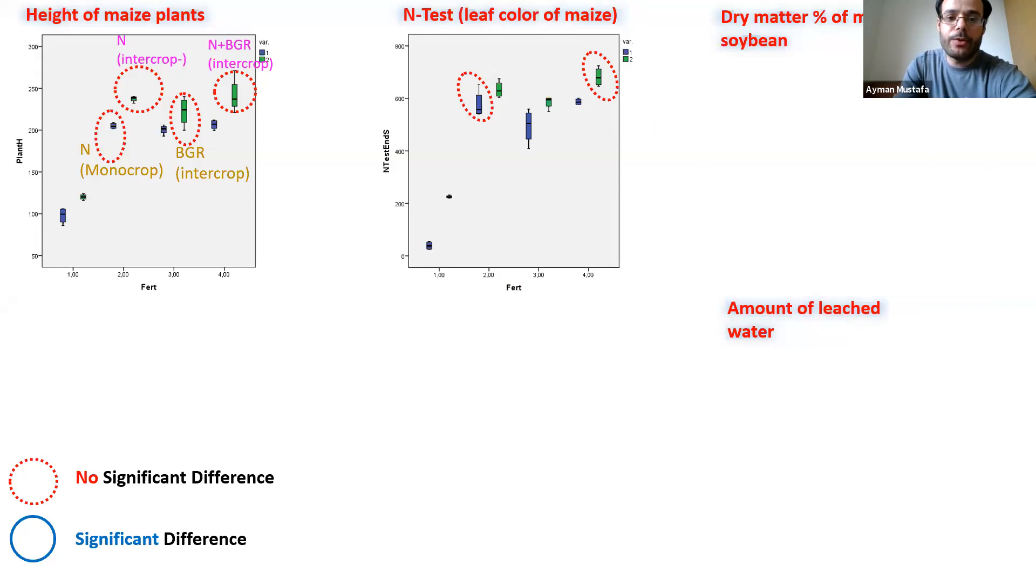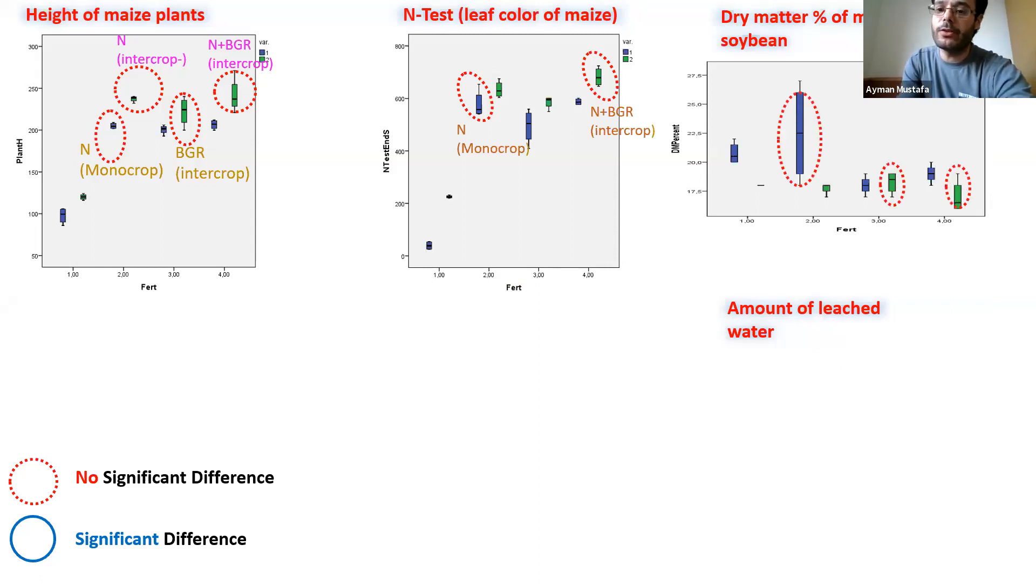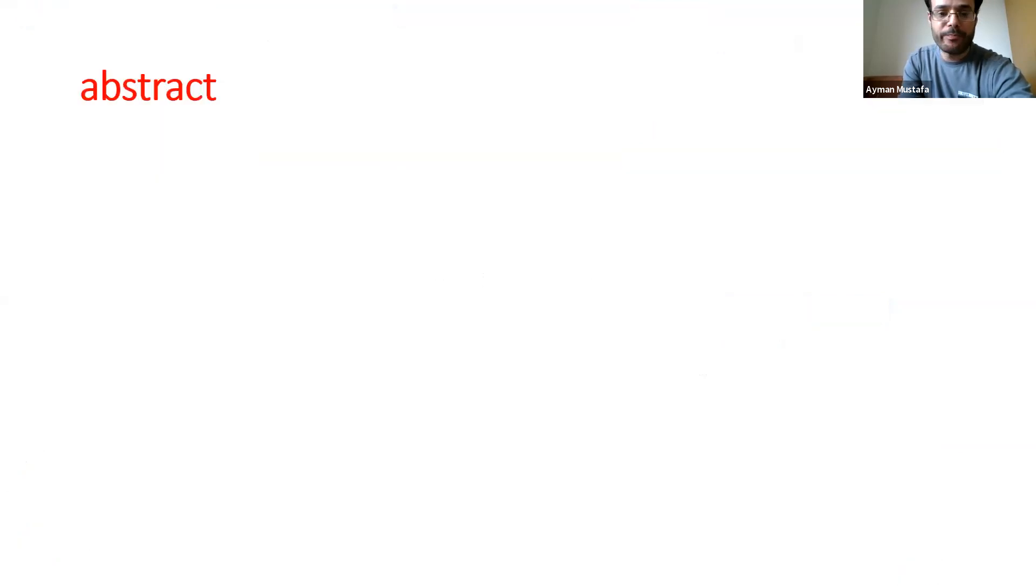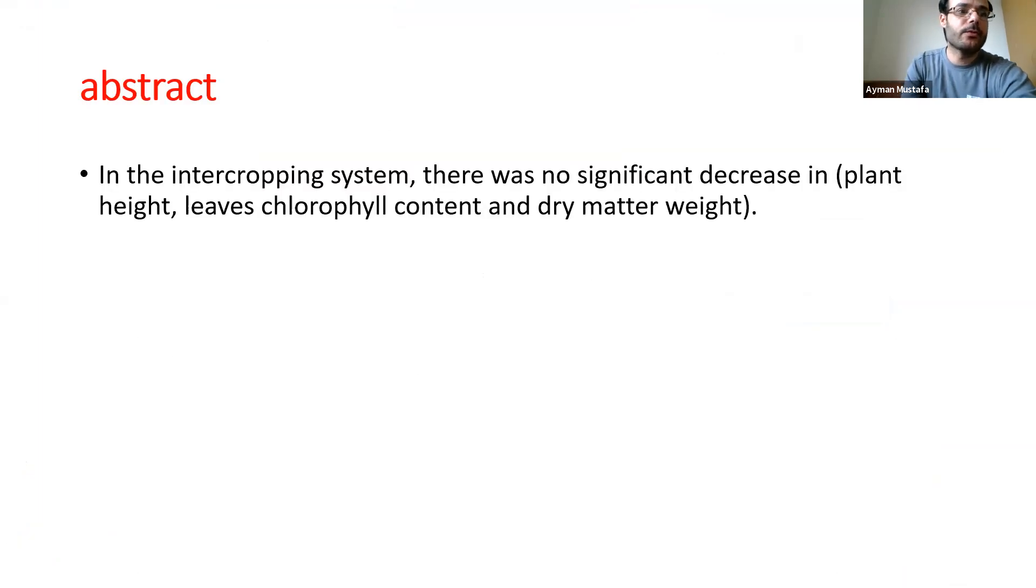We have noticed that there were no significant differences in the dry matter percentage of maize and soybean between the means of the treatments. But the amount of leached water we have noticed that there were significant differences between the means of the treatments.